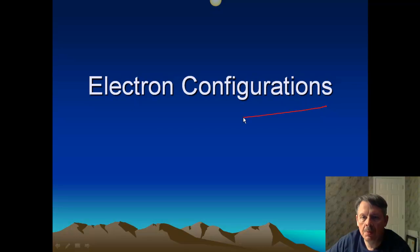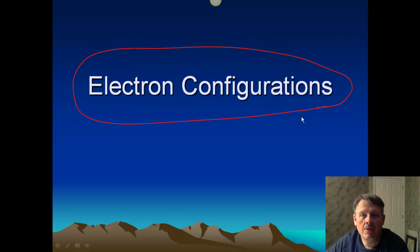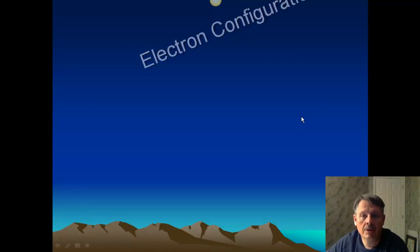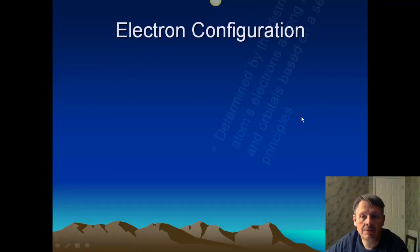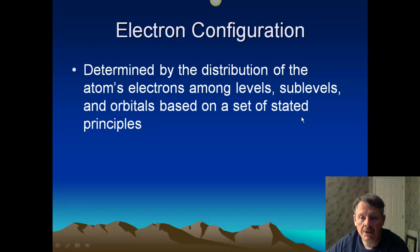Hello, everybody. Today we're going to be talking about electron configurations. Essentially, what we're trying to do is create an address for every electron — where does every electron live? An electron configuration is determined by the distribution of the atom's electrons among levels, sublevels, and orbitals based on a set of stated principles.